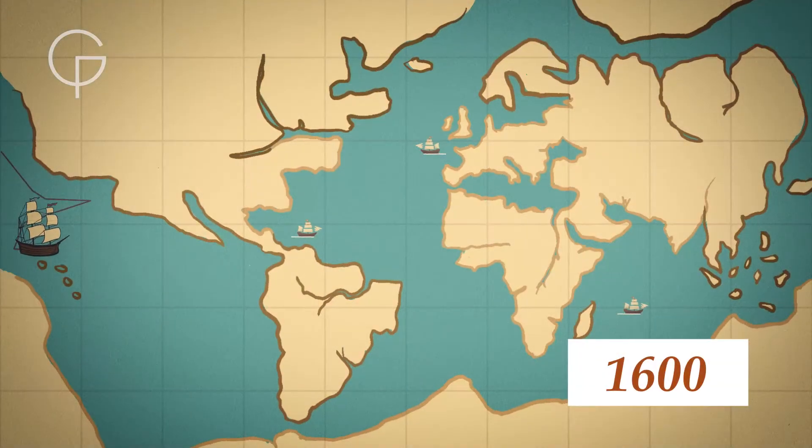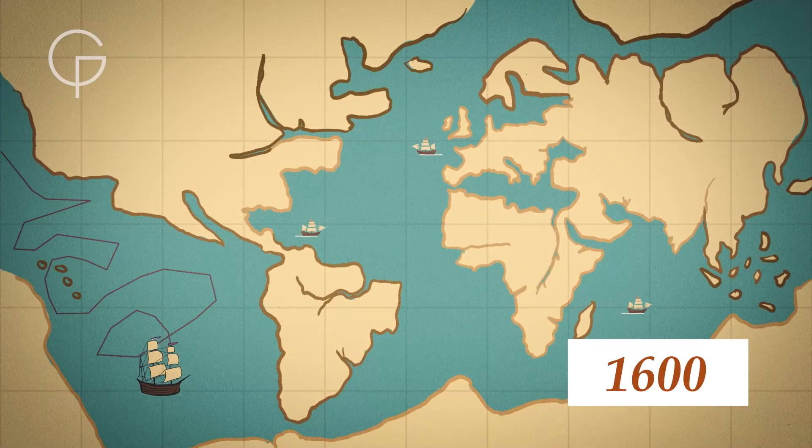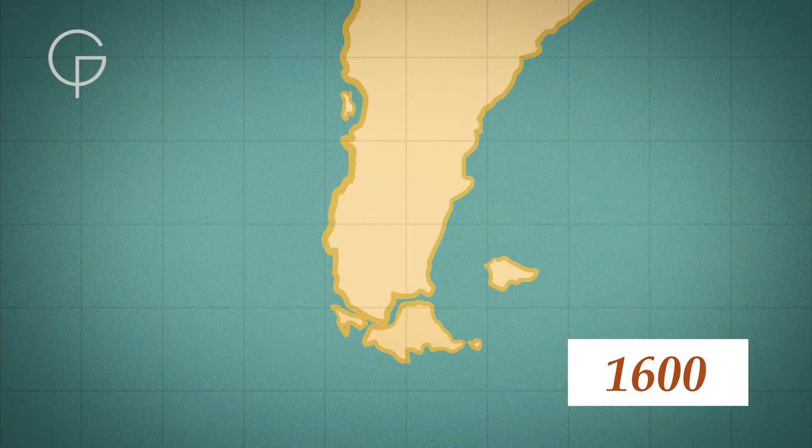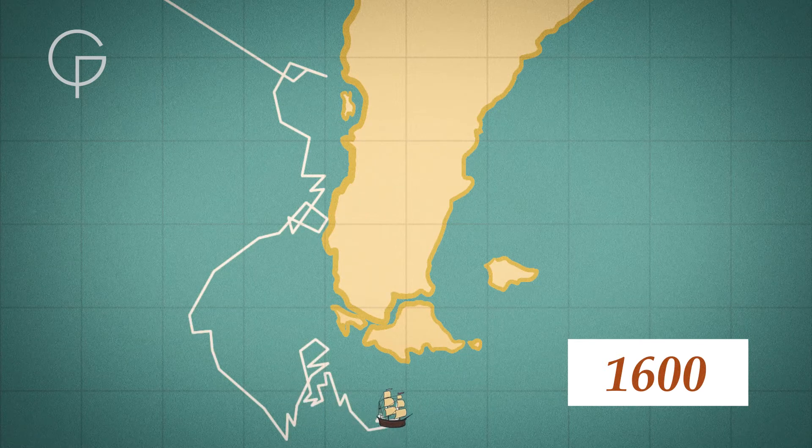By the 1600s, Britain and other European nations depended on the sea to trade and keep in contact with faraway lands. To save lives and money, sailors needed an easy way to calculate their longitude while at sea.